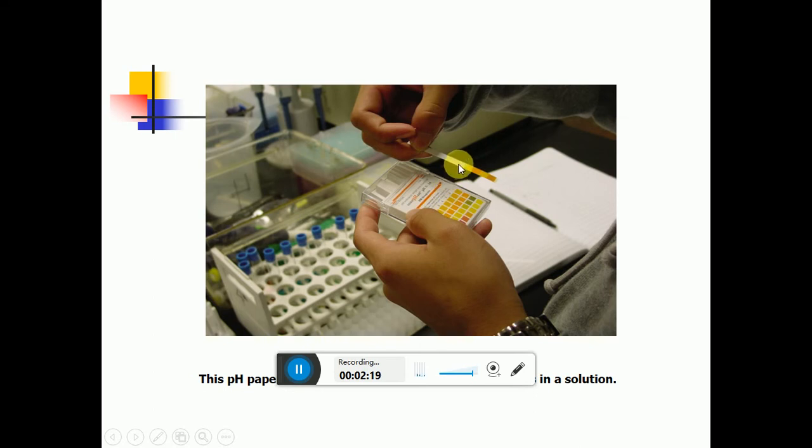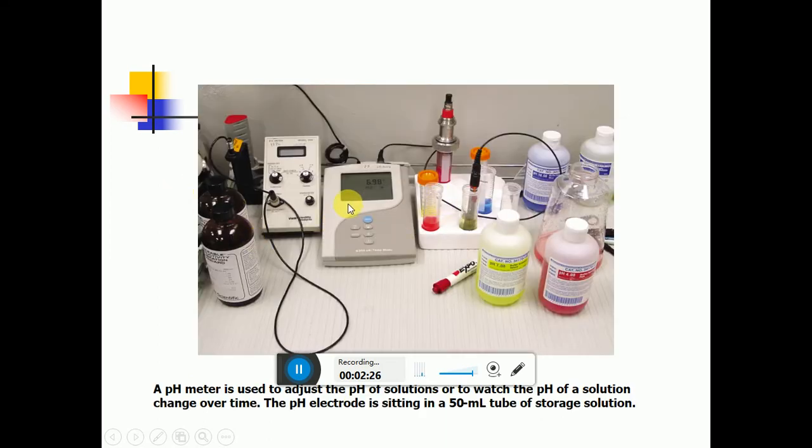These are test strips of pH paper to determine the pH of a solution. This is the pH meter. It has electrodes, and these electrodes are dipped into the solution for which the pH is to be determined.